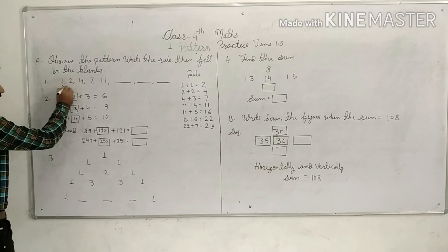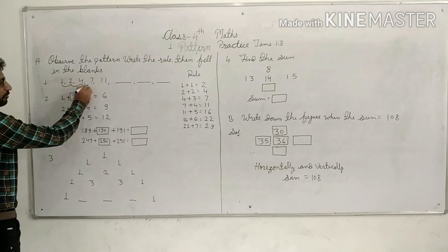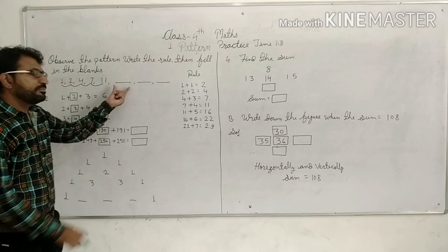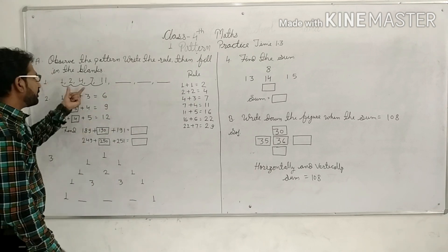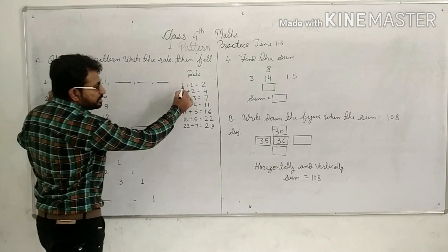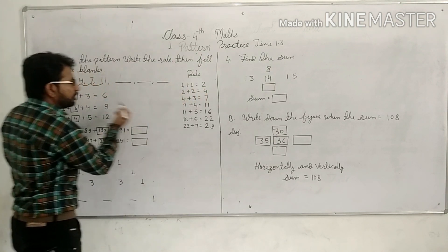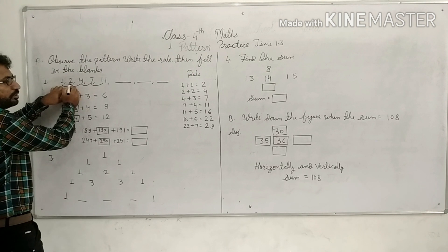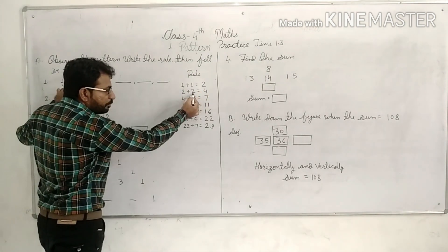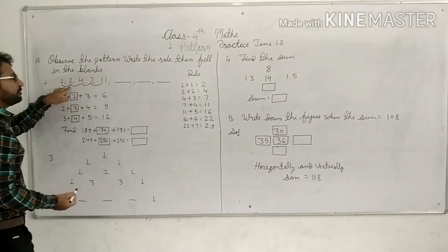So, see 1, 2, 4, 7, and 11. Next, which discipline will be coming? We have to understand the pattern. First of all, we have to look at the rule. This rule means 1 plus 2. Then 2 plus 2. This rule means 2 plus 4.